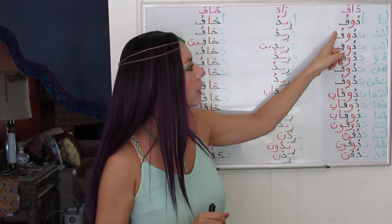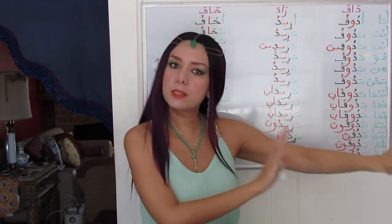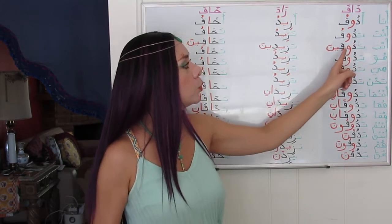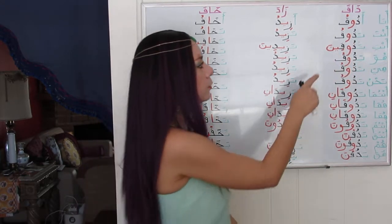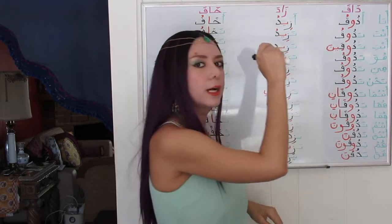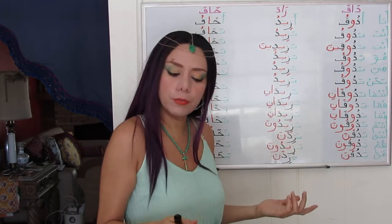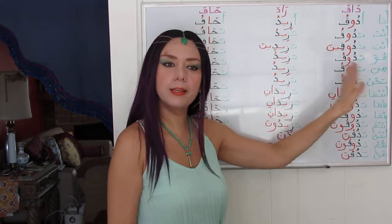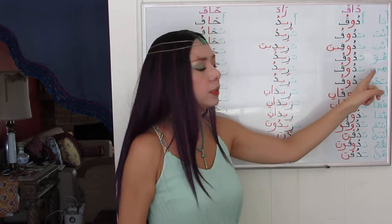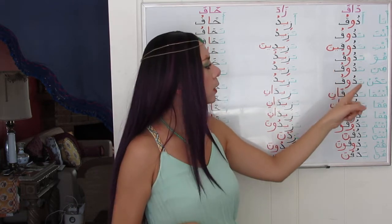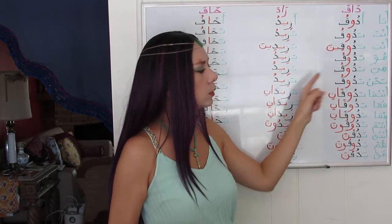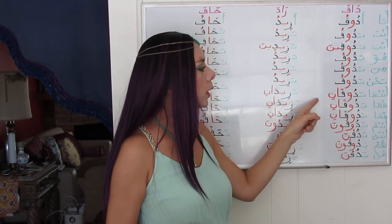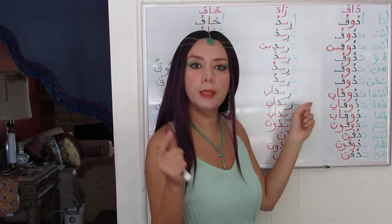We have a dhamma — the waw stays. After the qaf, the kasra comes, which is a short vowel, so the waw stays: huwa yadhuku. Same thing: hiya tadhuku, nahnu nadhuku. Again we have dhamma. Antuma tadhukani, for feminine and masculine, second person dual. Huma yadhukani — again the suffix starts with a fatha. Antum tadhukuna — we have a dhamma at the start of the suffix, so the waw stays.